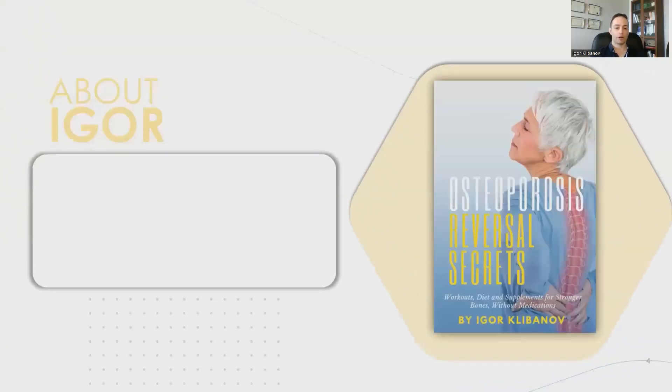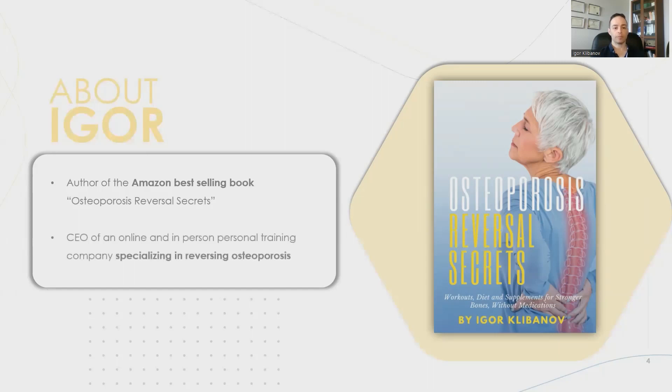My name is Igor. I'm the author of the Amazon best-selling book called Osteoporosis Reversal Secrets. As well, I run a personal training company, both in person as well as virtual, that specializes in helping people reverse their osteoporosis. Of course, since my team and I are personal trainers who specialize in osteoporosis, here are a few of our case studies.